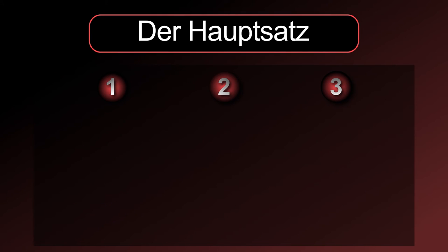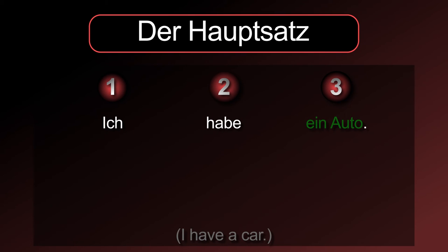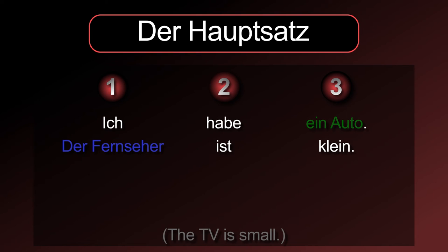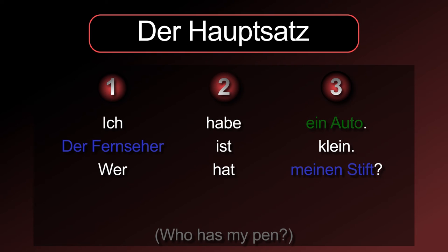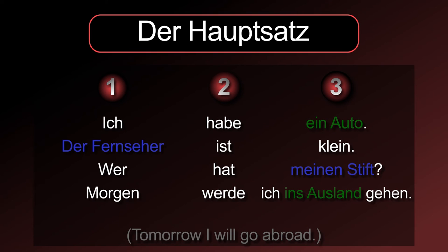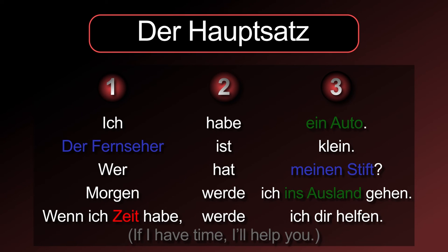In German, you can put almost everything on position 1. Here are some examples — Pronouns: Ich habe ein Auto. Nouns: Der Fernseher ist klein. Interrogative word: Wer hat meinen Stift? Time: Morgen werde ich ins Ausland gehen. Subordinate clause: Wenn ich Zeit habe, werde ich dir helfen.